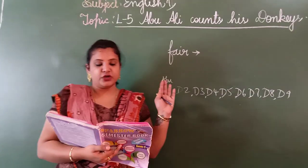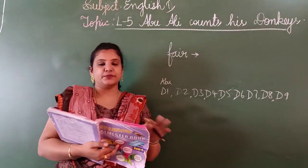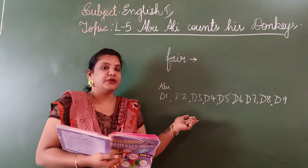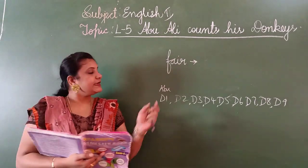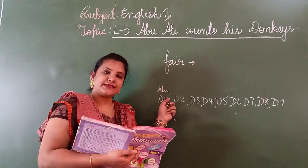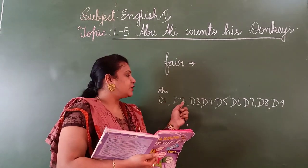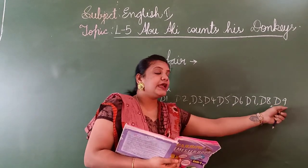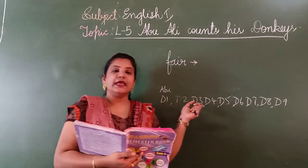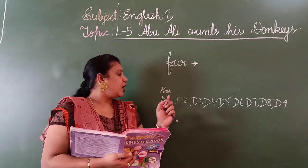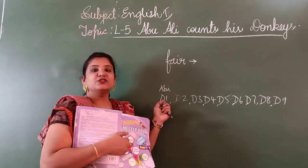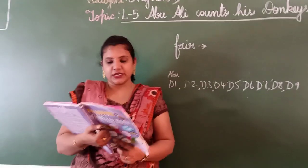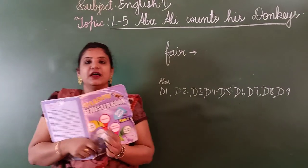After travelling for some time, he thought, okay, let me count the donkeys and see whether they are coming behind me or not. He turned back, sitting on the donkey, and started counting. He counted one, two, three, four, five, six, seven, eight. How come there are only eight donkeys? Where is the ninth? Abu Ali forgot to count the donkey he was sitting on, so it came to only eight.